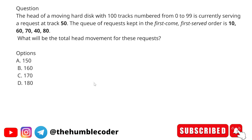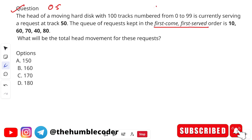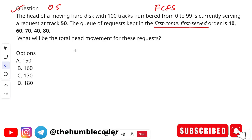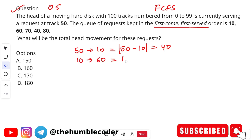The next question is from operating systems. The head of a moving hard disk with 100 tracks numbered 0 to 99 is serving a request at track 50. The queue of requests in First Come First Serve (FCFS) order is: 10, 60, 70, 40, and 80. What will be the total head movement? Under FCFS, we serve requests in the given order starting from track 50 and calculate absolute movement between successive positions.